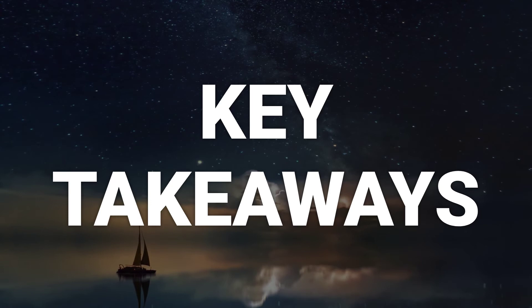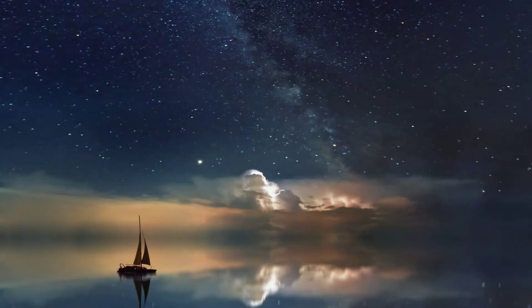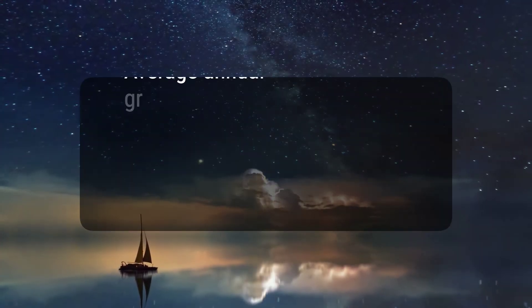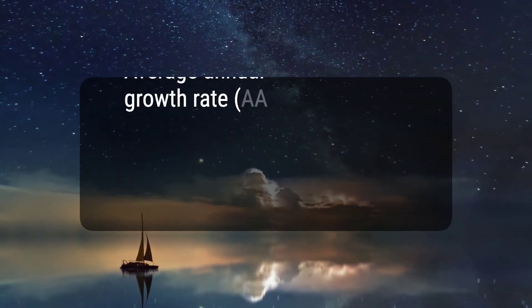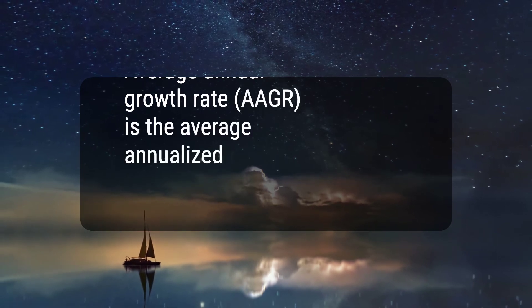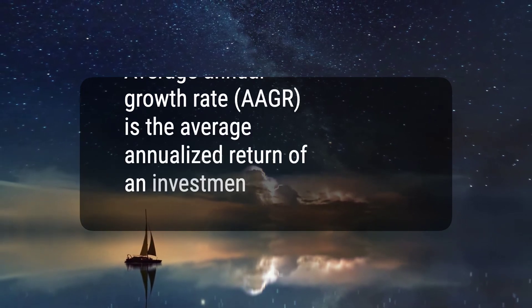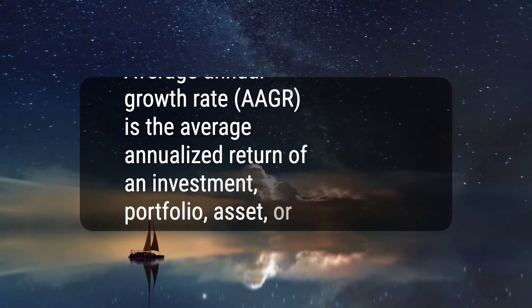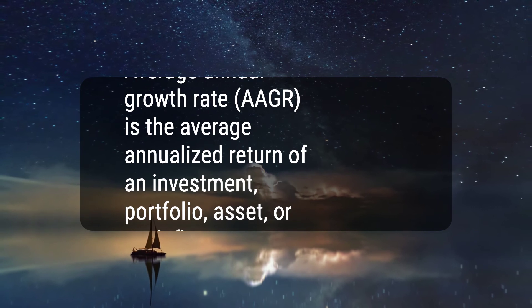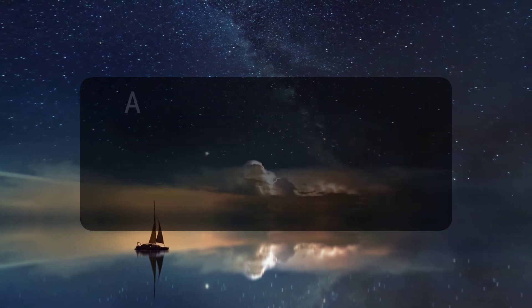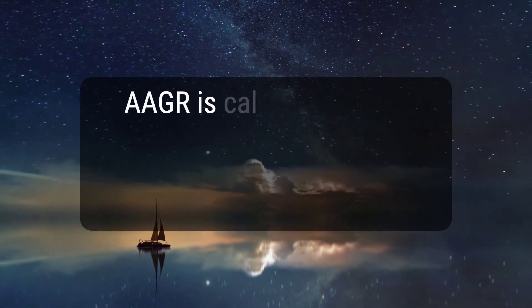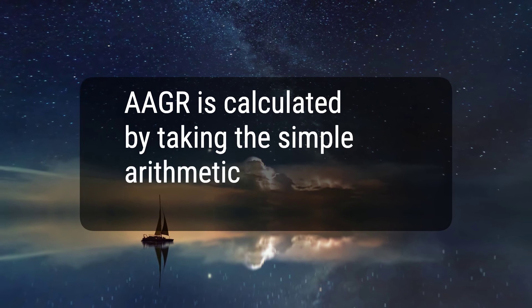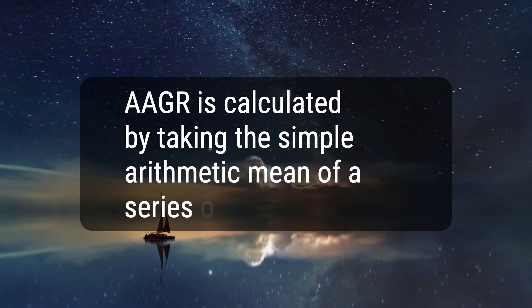Here are three key takeaways. 1. Average annual growth rate, AAGR, is the average annualized return of an investment, portfolio, asset, or cash flow over time. 2. AAGR is calculated by taking the simple arithmetic mean of a series of returns.